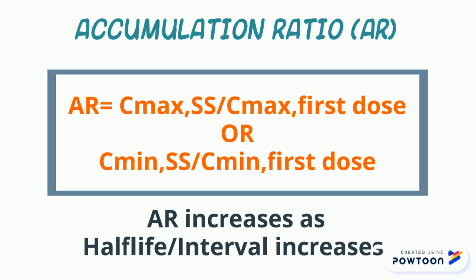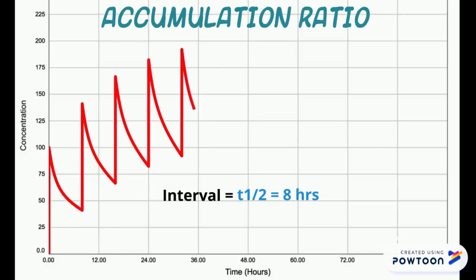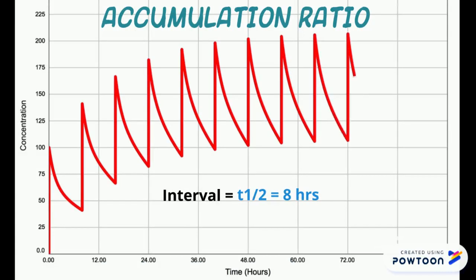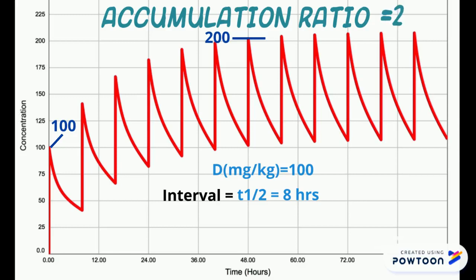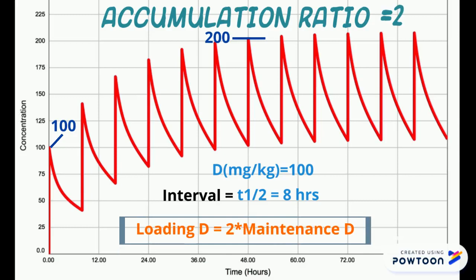Many times all that is provided in drug formularies is the half-life and the maintenance dose, but we can easily calculate a loading dose from those two values. In a simulation where a drug is administered at an interval equivalent to its half-life — in this case eight hours — administering a maintenance dose of 100 mg/kg will eventually lead to accumulation of the concentration to twice what it was after the original dose. C-max at steady state is about twice what it was after the first dose, so the accumulation factor is two, which is the multiplier you apply to the maintenance dose to calculate the loading dose.